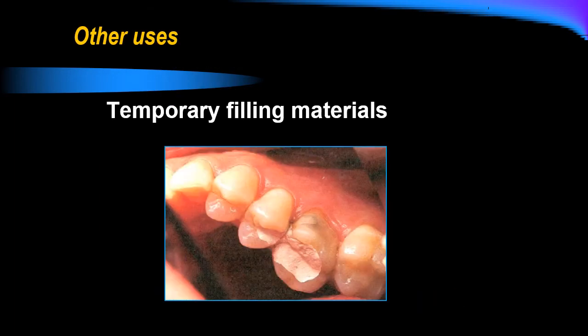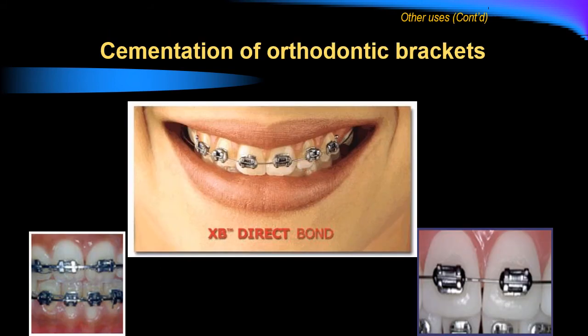Other uses for dental cement include temporary filling material between visits to relieve the patient's pain. We excavate the caries and do some mechanical tooth preparation, then relieve pulp pain using a temporary filling material, because placing a permanent filling at the same visit would add to the irritation of the pulp. We must protect the pulp as much as possible. Also, dental cements are used for cementation of orthodontic brackets during orthodontic treatment.